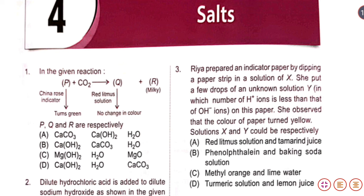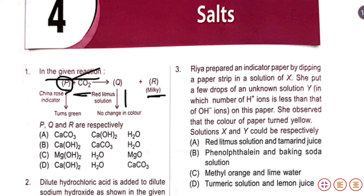Question number 1 says: in the given reaction, a chemical called P is given. The China rose indicator turns green when mixed with CO2. We need to find out what P is. The reaction shows that the red litmus solution has no changes — it means no acidic reaction has occurred here. R is milky. So now we need to determine what P is.